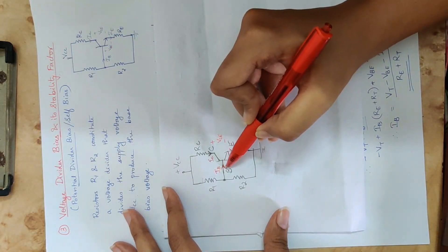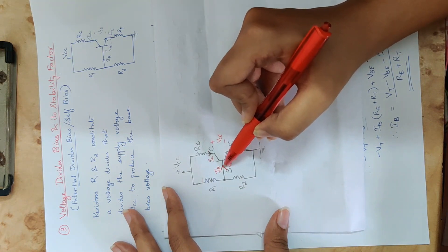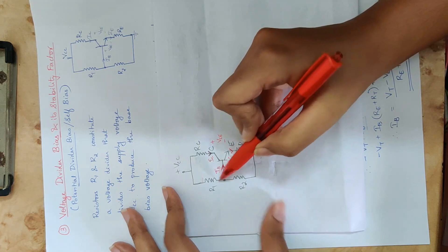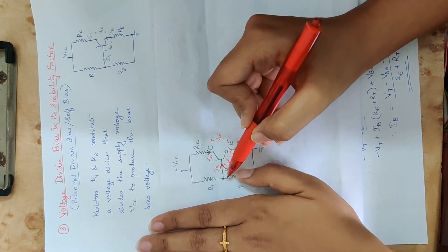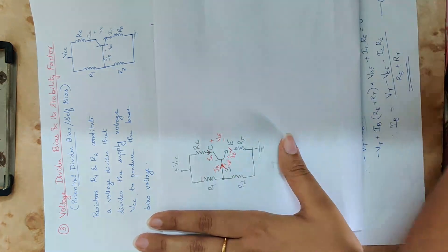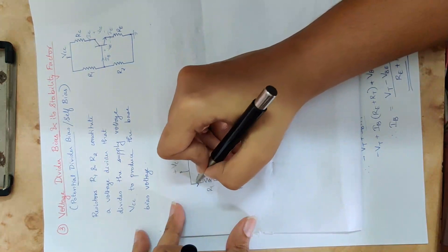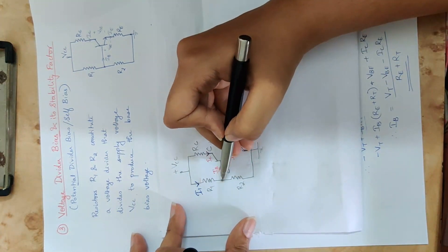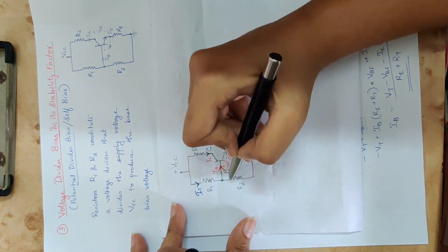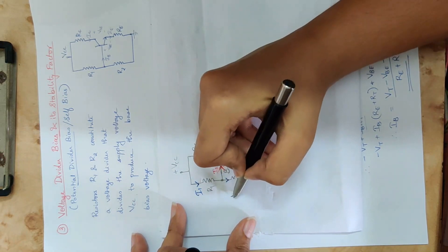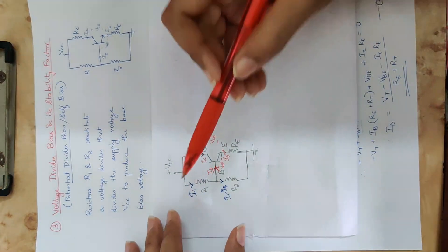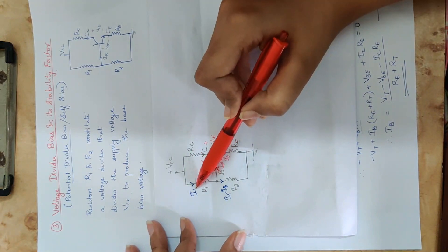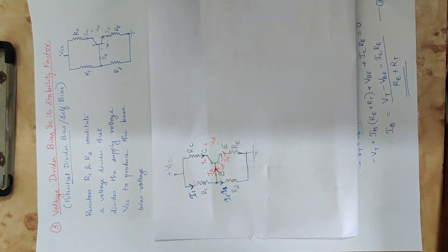In the second circuit, we consider: what is the base current? We connect a second resistance and another branch. When we connect the supply, the current is split into two: one part is I1, and the other going into the base is IB, so the current through R2 is I1 minus IB.